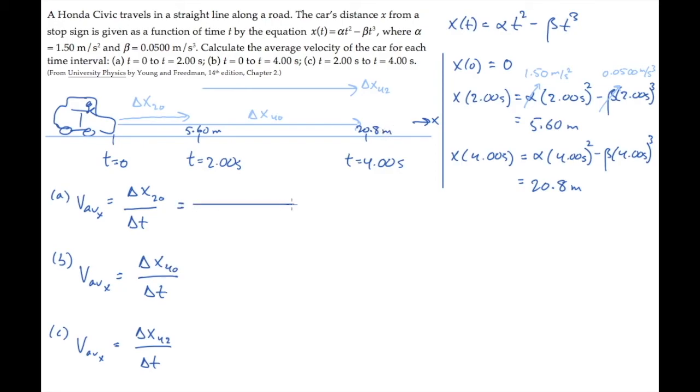In part a, the average velocity from t equals 0 to 2 is the change in position. So final minus initial, x at 2 seconds minus x at 0 seconds divided by the elapsed time, that's 2 seconds. And you get 2.80 meters per second.